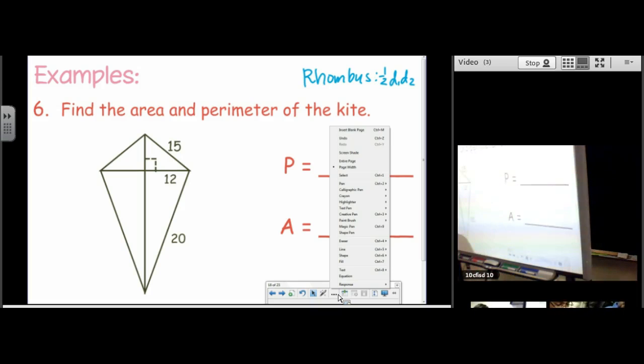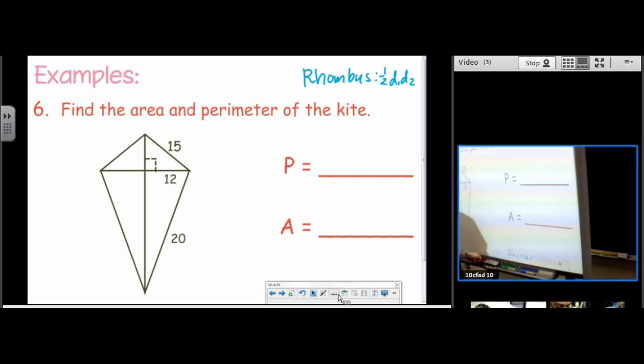You're allowed to use your formula chart on every quiz and every test. So tomorrow, you're allowed to use a formula chart. Okay, Pythagorean triples. 15 squared minus 12 squared. Take the square root and we get 9. If this is 12, this is 12 because of the properties of a kite.